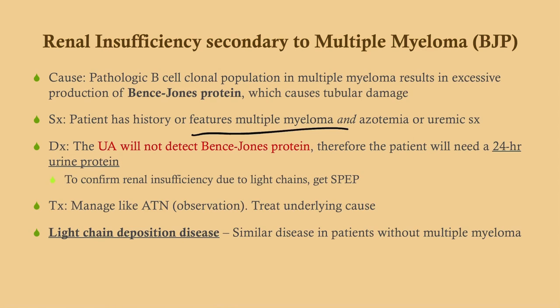If a patient has symptoms of multiple myeloma with renal insufficiency and isn't yet diagnosed, the best step to diagnose multiple myeloma is serum protein electrophoresis (SPEP). Manage with observation and treat the underlying cause. There is also light chain deposition disease, which is similar but seen in patients without multiple myeloma.